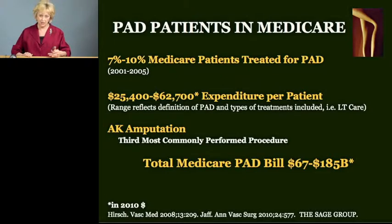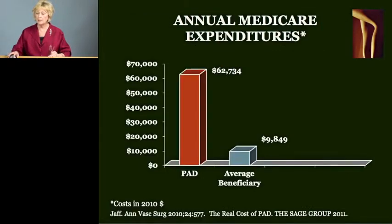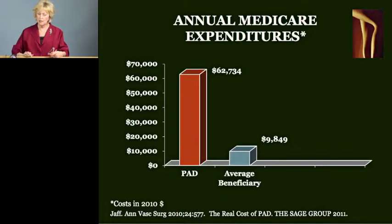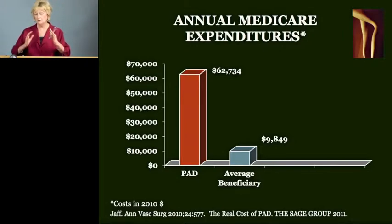Above-the-knee amputation was significantly the third most common procedure performed in Medicare PAD patients. If we examine annual expenditures on PAD patients in Medicare, they're about $63,000 — again, using the higher figure that includes long-term care costs. Compared with the average expenditure on a Medicare patient of only about $9,800, there's a huge difference between these two levels of spending.